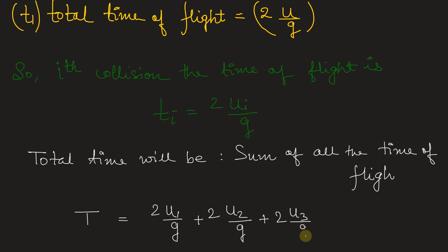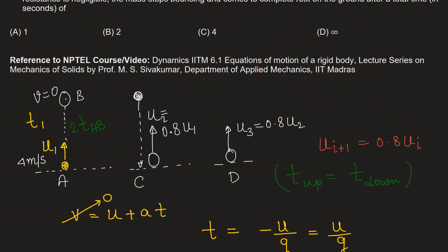Plus 2u3 by g, u3 is the velocity before third collision and it will go till infinity. Because if you observe in this diagram...